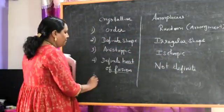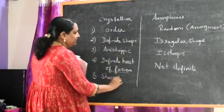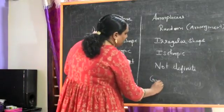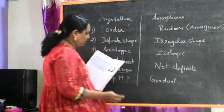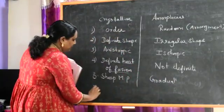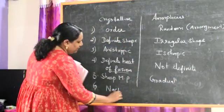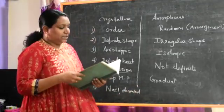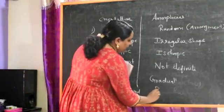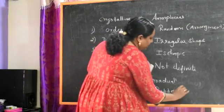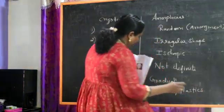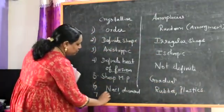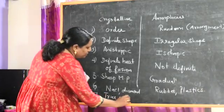The next difference is that crystalline solids have a sharp melting point, while amorphous solids melt gradually. Examples of crystalline solids include NaCl and diamond — diamond is a solid crystal substance. Examples of amorphous solids include rubber and plastics. Crystalline solids are called true solids.